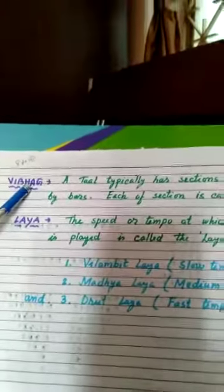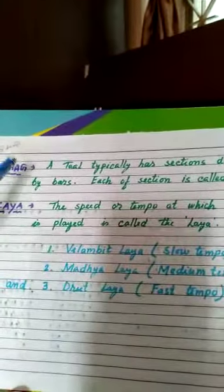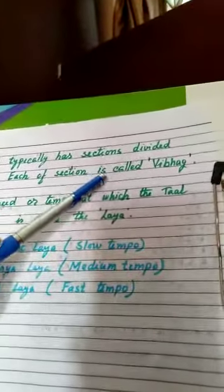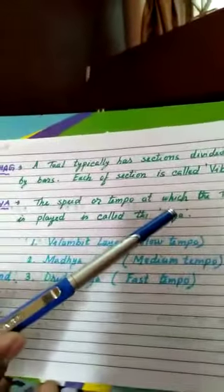Next you can see vibhag. So you know the meaning of vibhag is sections or divisions. A tal typically has sections divided by bars. Each of the sections is called vibhag. Like tin tal has four vibhags, dadra has two vibhags.